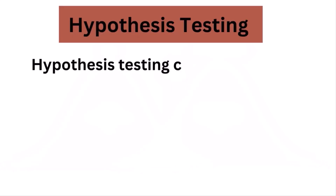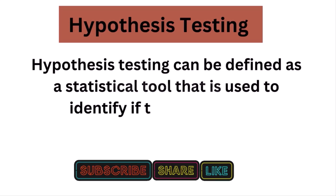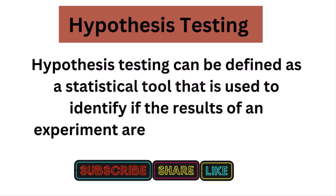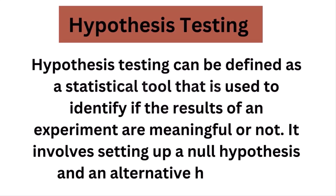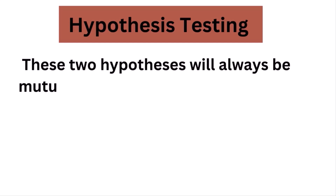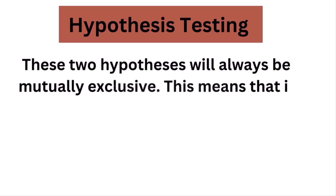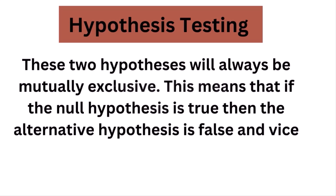In other words, hypothesis testing can be defined as a statistical tool that is used to identify if the results of an experiment are meaningful or not. It involves setting up a null hypothesis and an alternative hypothesis. These two hypotheses will always be mutually exclusive, meaning that if the null hypothesis is true then the alternative hypothesis is false and vice versa. An example of hypothesis testing is setting up a test to check if a new medicine works on a disease in a more efficient manner.